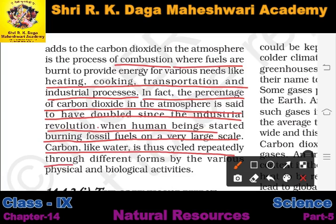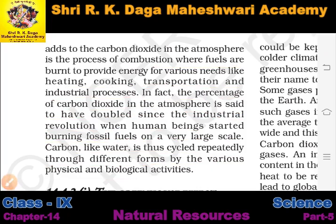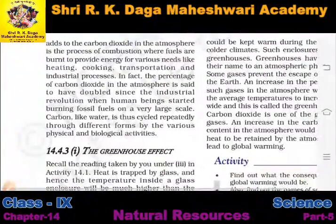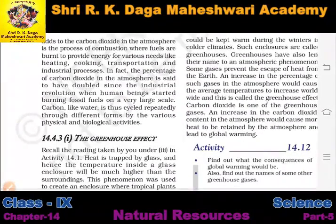Carbon is thus recycled repeatedly through different forms by various physical and biological activities. Green plants, through the process of photosynthesis, convert carbon dioxide into oxygen, so carbon dioxide concentration does not increase excessively and a balance is maintained in our atmosphere. So students, we have discussed two types of cycles: the nitrogen cycle and the carbon cycle.